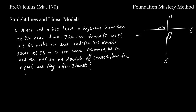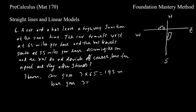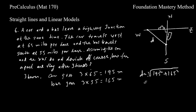In three hours, the car travels 3 × 65 = 195 miles, and the bus travels 3 × 55 = 165 miles. This forms a right triangle, so we use the Pythagorean theorem: distance = √(195² + 165²). Using a calculator and rounding to two decimal places, the distance is approximately 255.44 miles.